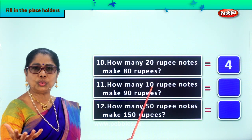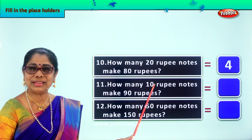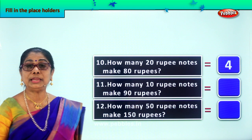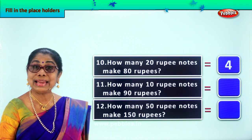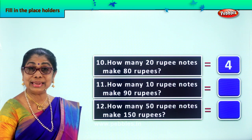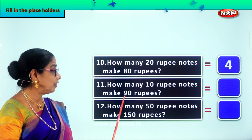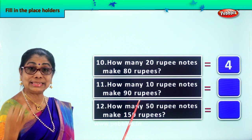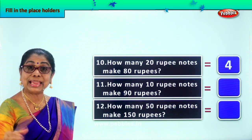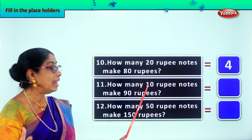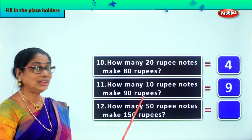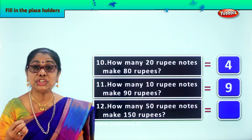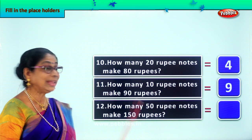Next, how many 10-rupee notes? What's the color of 10-rupee notes? Lovely light brown color. How many 10-rupee notes to make 90 rupees? 10 ones are 10, 10 twos are 20, 10 threes are 30, 10 fours are 40, 10 fives are 50, 10 sixes are 60, 10 sevens are 70, 10 eights are 80, 10 nines are 90. We need 9 ten-rupee notes to make 90 rupees.